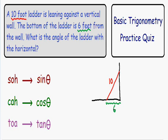And if we continue to the last part of the problem, it says, what is the angle of the ladder with the horizontal? So I'm going to label the angle as theta, and this angle theta is the angle that the ladder makes with the horizontal ground. So this is what we're trying to find, this angle theta.